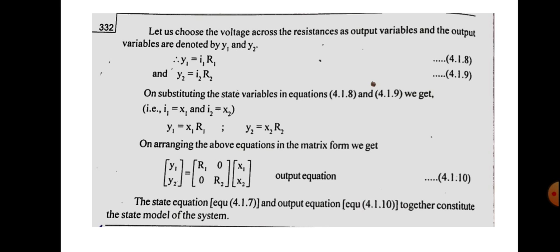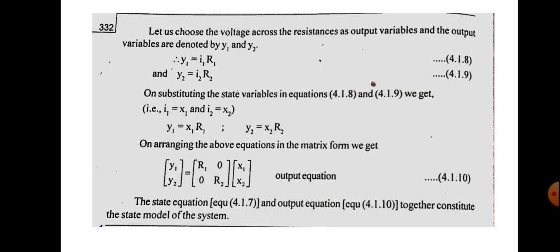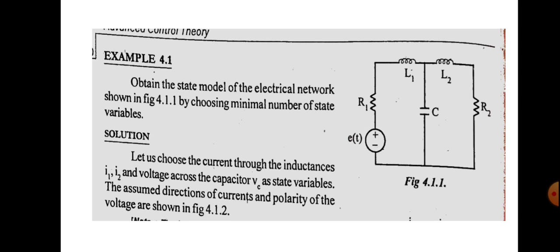The complete state model consists of the state equation and the output equation derived above. This is how we obtain the state model for an electrical network. Go through the problem once again and you will get the idea.